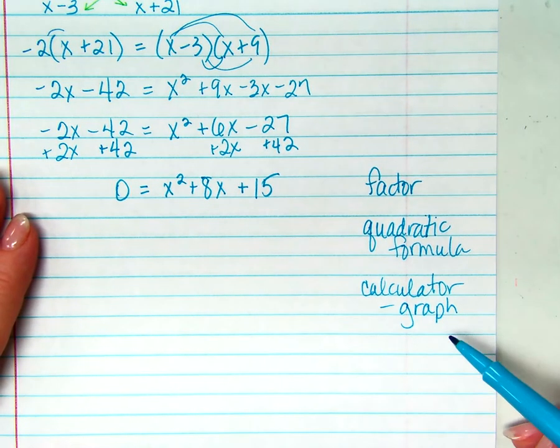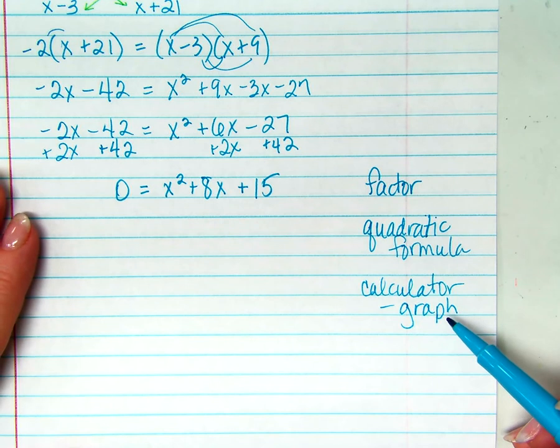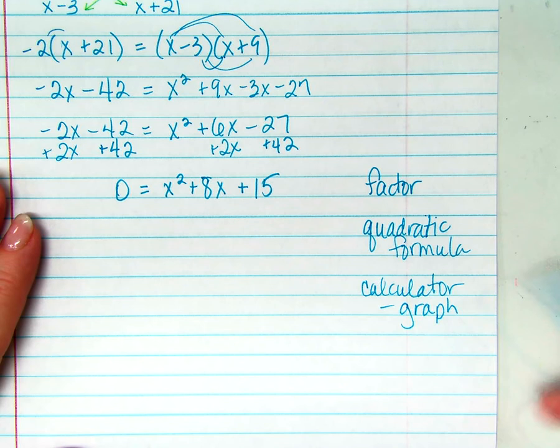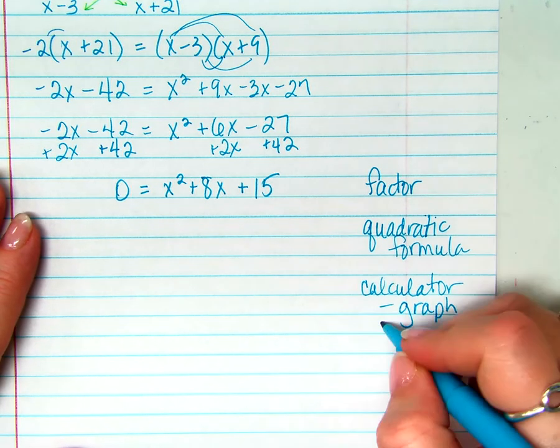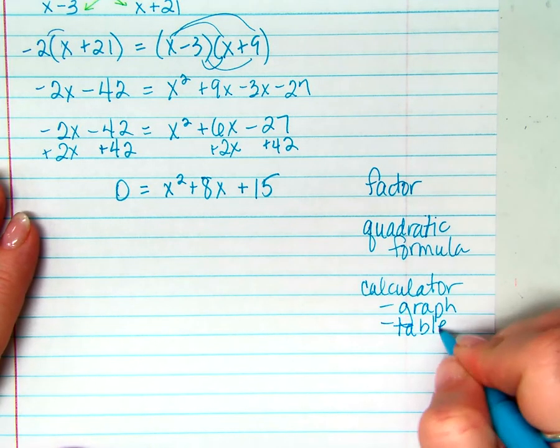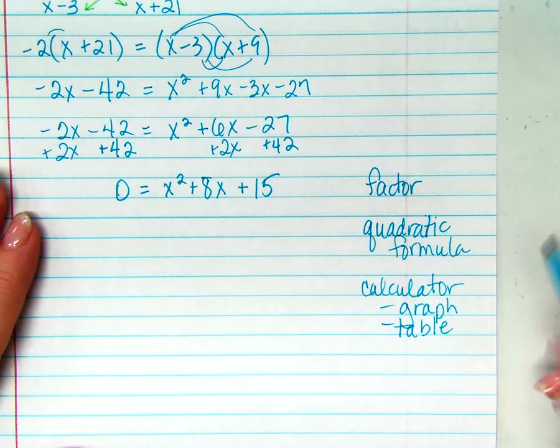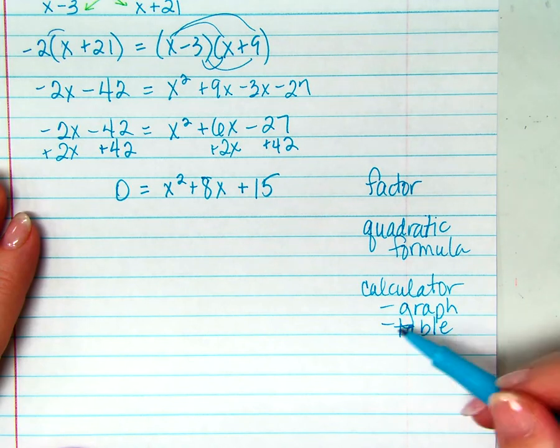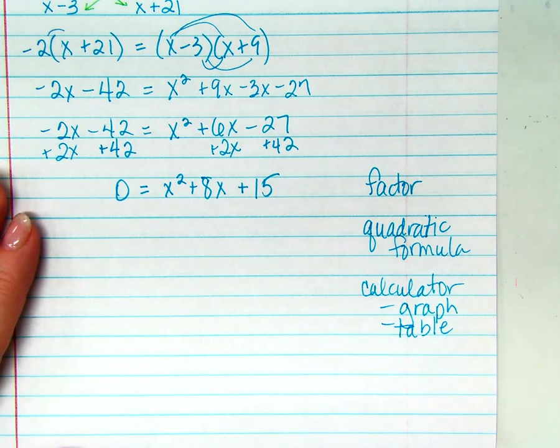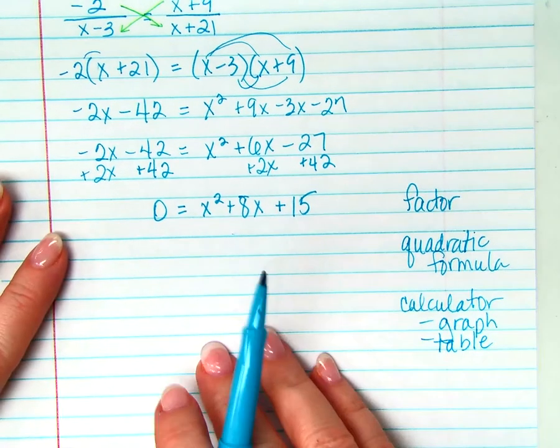Or we could use our calculator by looking either at the graph. What are we looking for if we look at the graph? Where it crosses the x-axis. Perfect. What about, could we use the table? Yes. What are we looking for in the table? Where y is equal to 0. Good.